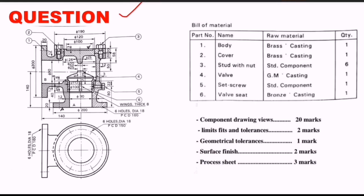In production drawing, the question is going to ask you to draw the component drawing views, limits, fits and tolerances, geometrical tolerances, surface finish, and process sheet. These are the six parts in the question of the non-return wall.